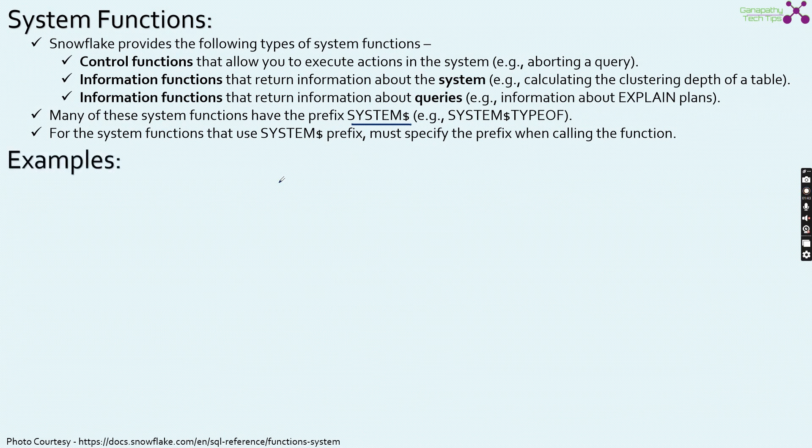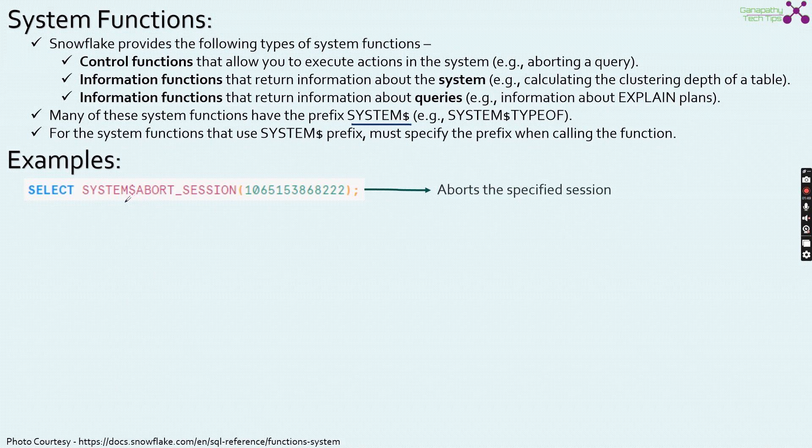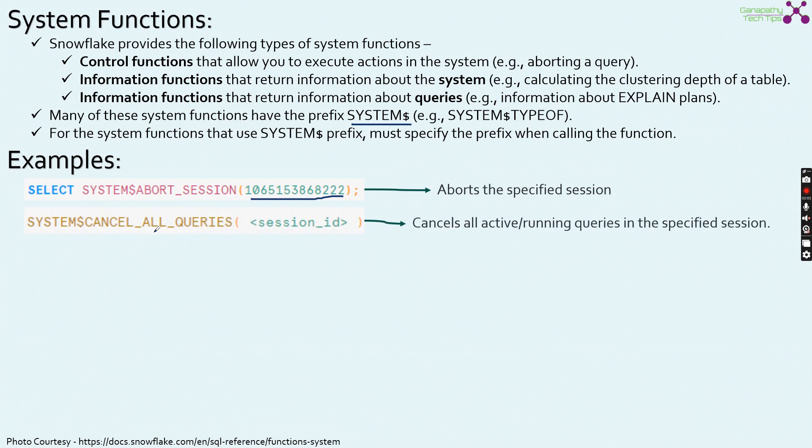Now let us see some examples before we dive deeper into the Snowflake documentation. Here if you see select system about session followed by the session id, this will abort this specific session. Since there is a system$ here, this function is a system function. Again if you see cancel all queries session id, we will cancel all the active and running queries in the specified session.